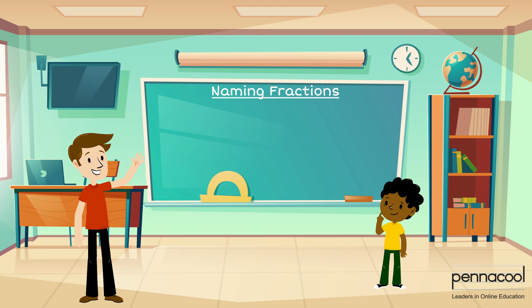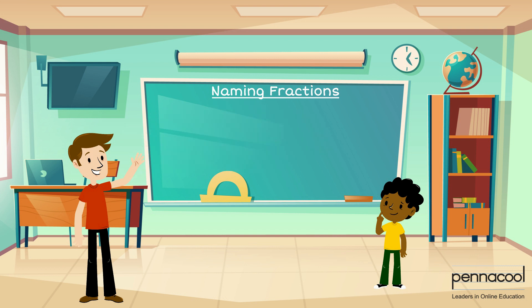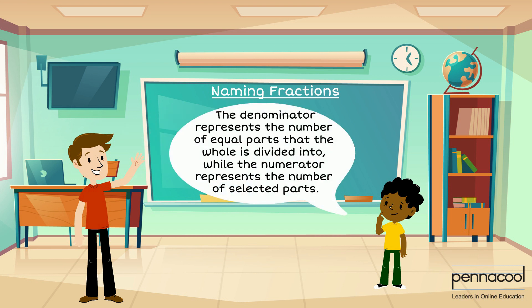Before Sir begins to help, he asks Gabriel if he understands what the numerator and denominator of fractions represent. Gabriel correctly answers that the denominator represents the number of equal parts that the whole is divided into, while the numerator represents the number of selected parts.